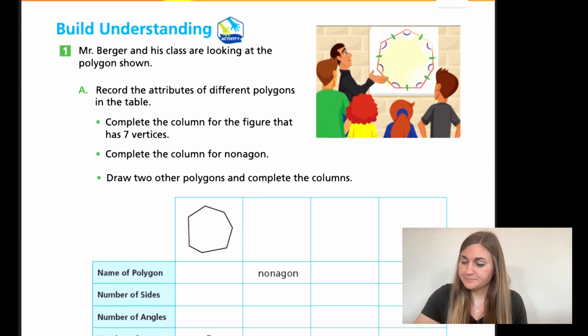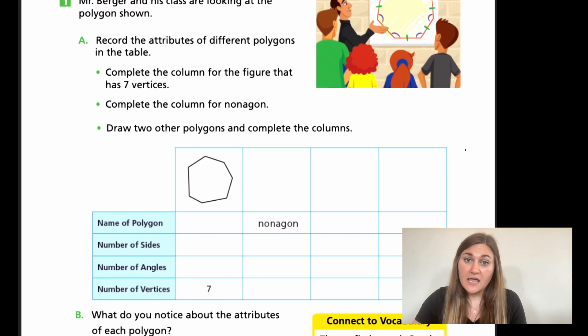All right. So let's go ahead and flip the page. Now, number one, build your understanding. It says Mr. Berger and his class are looking at the polygon shown. So for a, it said, record the attributes of different polygons in the table. So complete the column for the figure that has four vertices. So this odd shape that's showing in the table, you already see that it has a number seven. So we want to know the name of a polygon with seven. And I don't expect you to know the names, but I do expect you to find out the pattern of the number of sides, the number of angles, and the number of vertices. So I am going to let you do that on your own and then complete the column for the nonagon and then draw two other polygons and complete the column. So I am going to do about half of this with you. And then I'm going to have you do the other half on your own.